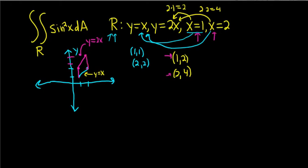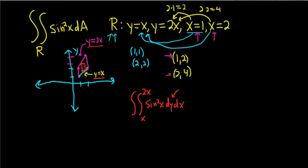There are two ways to do this: dy dx and dx dy. First, let's do dy dx — that means we have a vertical rectangle. Every time you do dy dx, you always have a vertical rectangle. Whenever you have a vertical rectangle, you have functions of x. The topmost function, in this case y equals 2x, goes up top. The bottommost function, y equals x, goes on the bottom. It's always top minus bottom whenever it's dy, and we're integrating from 1 to 2.